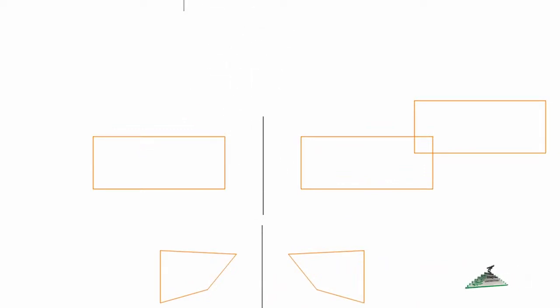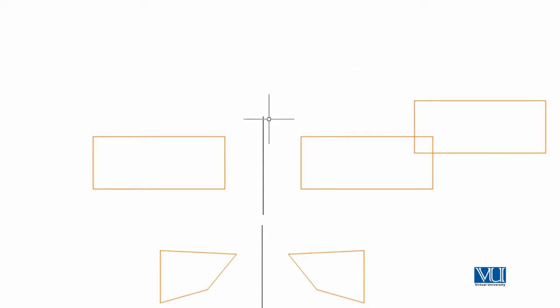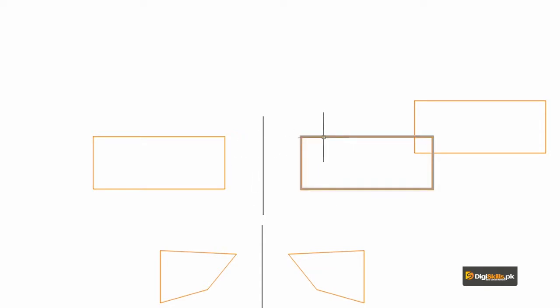If you want to create a layout plan, we can create a layout plan and a new picture. So if you want to create a new object, you can create a new object to create a new line and then connect the same distance.